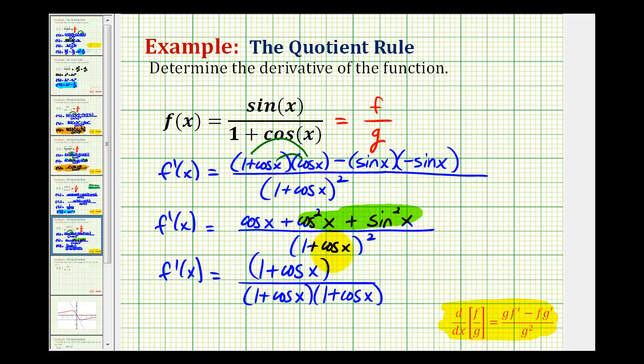So we can see there's a common factor of one plus cosine x between the numerator and denominator, which simplifies to one. So our derivative function is one, all over one plus cosine x, and this cannot be simplified any further.